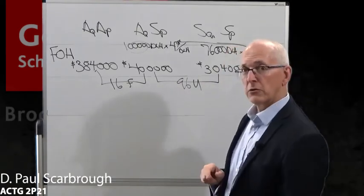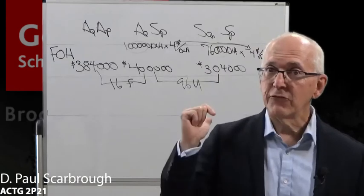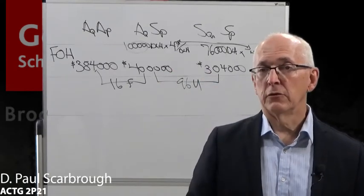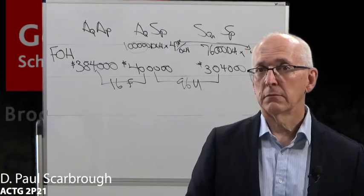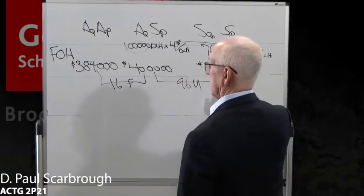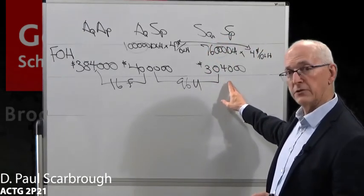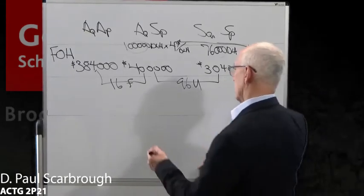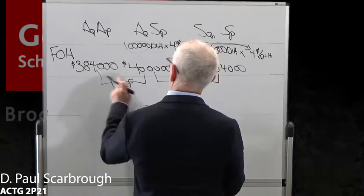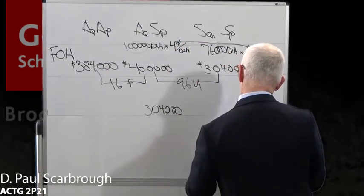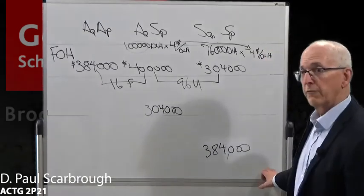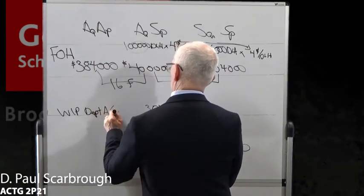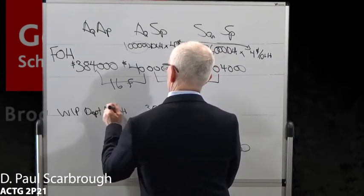Now we need to do the journal entries again. Pause the video, look at what we did for variable overhead, and write out your version of this journal entry for fixed overhead. What you should have done is remember the logic: standard costing means all debits into main accounts are at standard cost. This is the standard cost, so this has to be the main debit: WIP, Department A — $304,000. It has to come out of the FOH account — $384,000 going into WIP, Department A — this is FOH Applied, coming out of the FOH account.